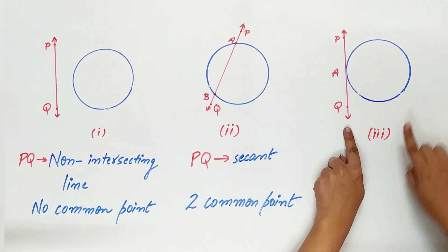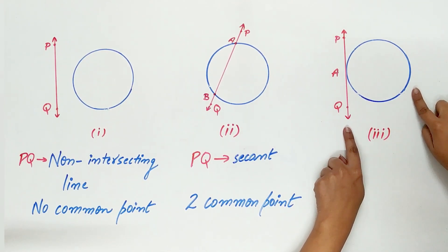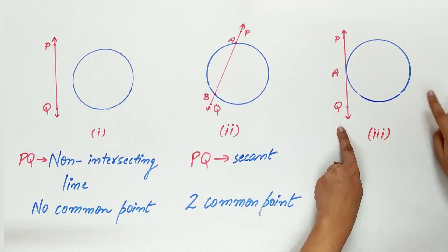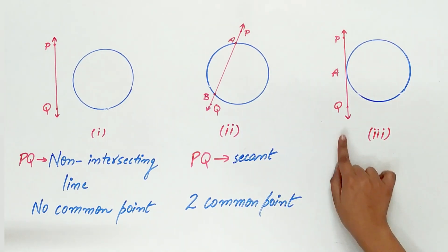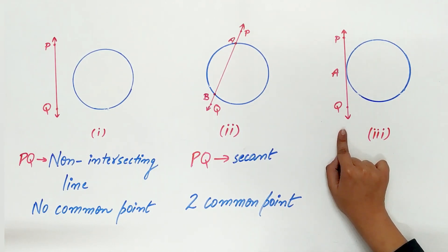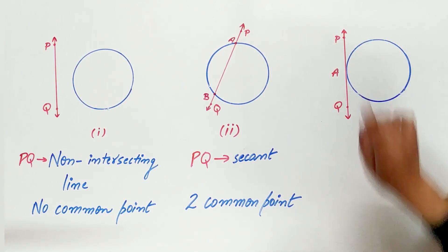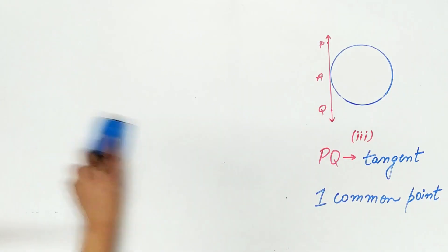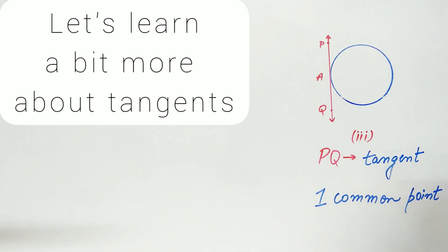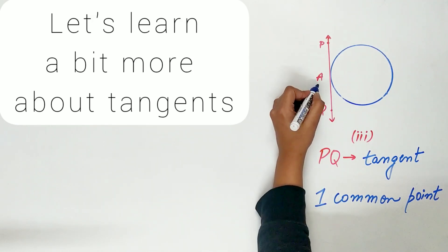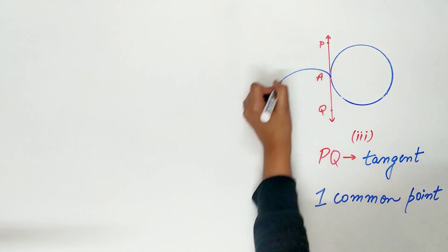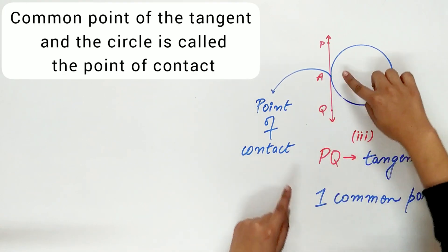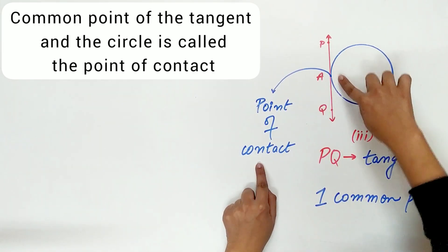In the third scenario, PQ touches the circle. Hence there is only one common point between the line and the circle. In this case PQ is a tangent. Point A is called the point of contact — the common point of a circle and a line is called the point of contact. Remember this.